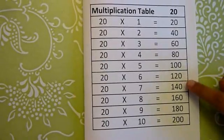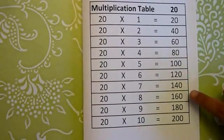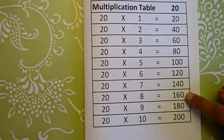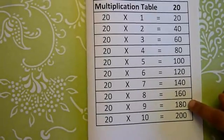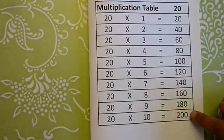20 sixes are 120, 20 sevens are 140, 20 eights are 160, 20 nines are 180, and 20 tens are 200.